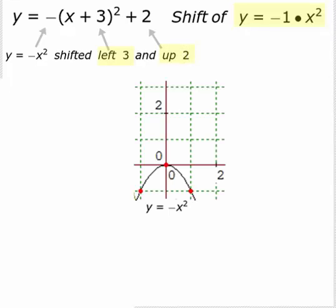I have y equal negative x squared graphed here. It has a vertex at 0, 0. When we go 1 unit to the right, we go down 1 unit; 1 unit to the left, down 1 unit. Remember that when we take the negative of a function, it reflects it across the x-axis. So y equal negative x squared is y equal x squared reflected down across the x-axis.